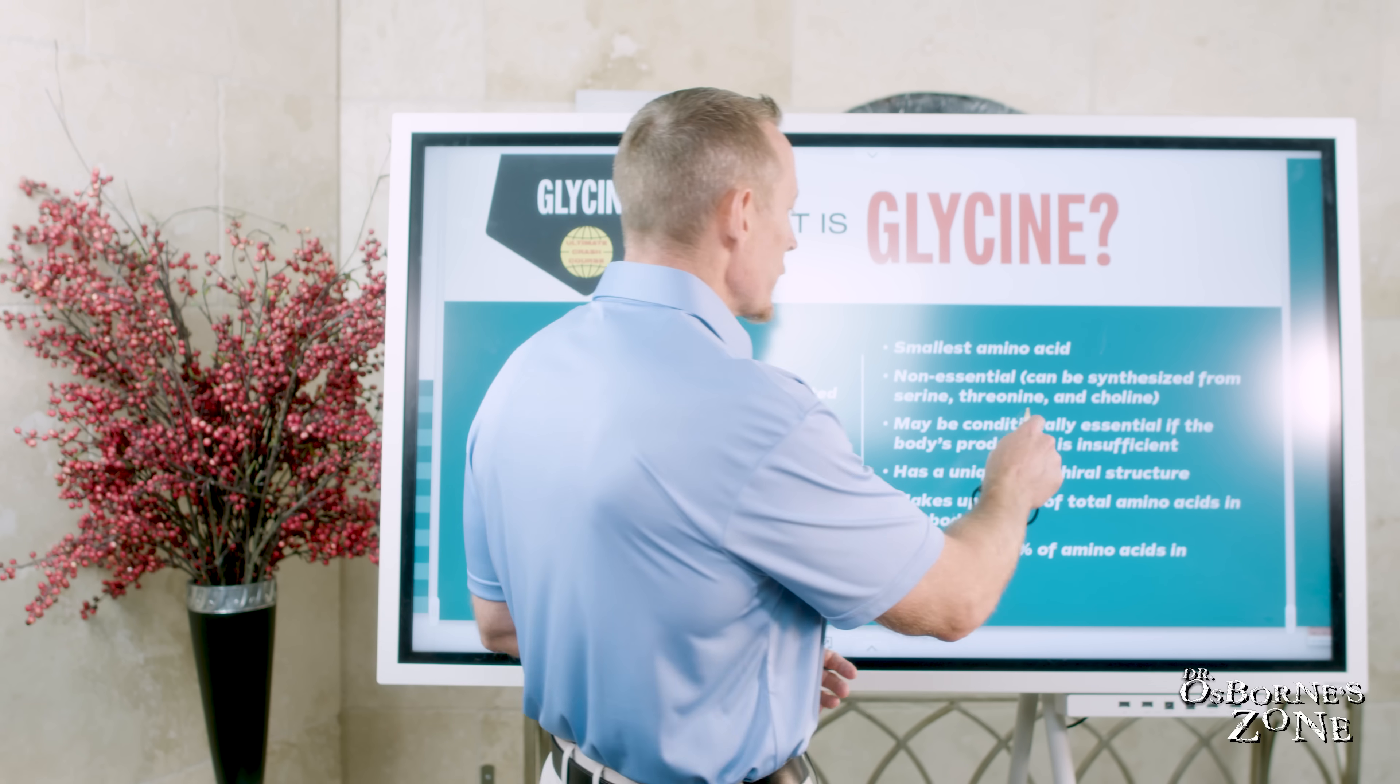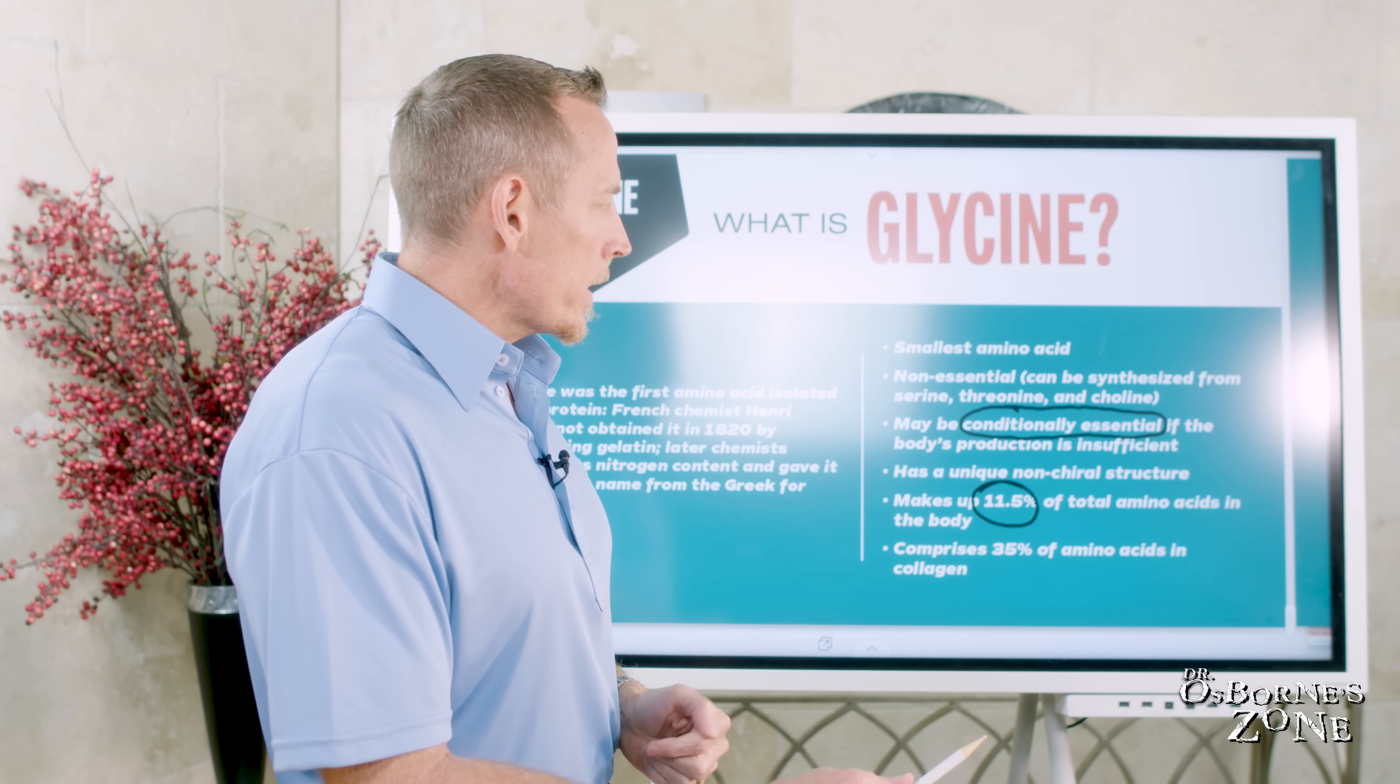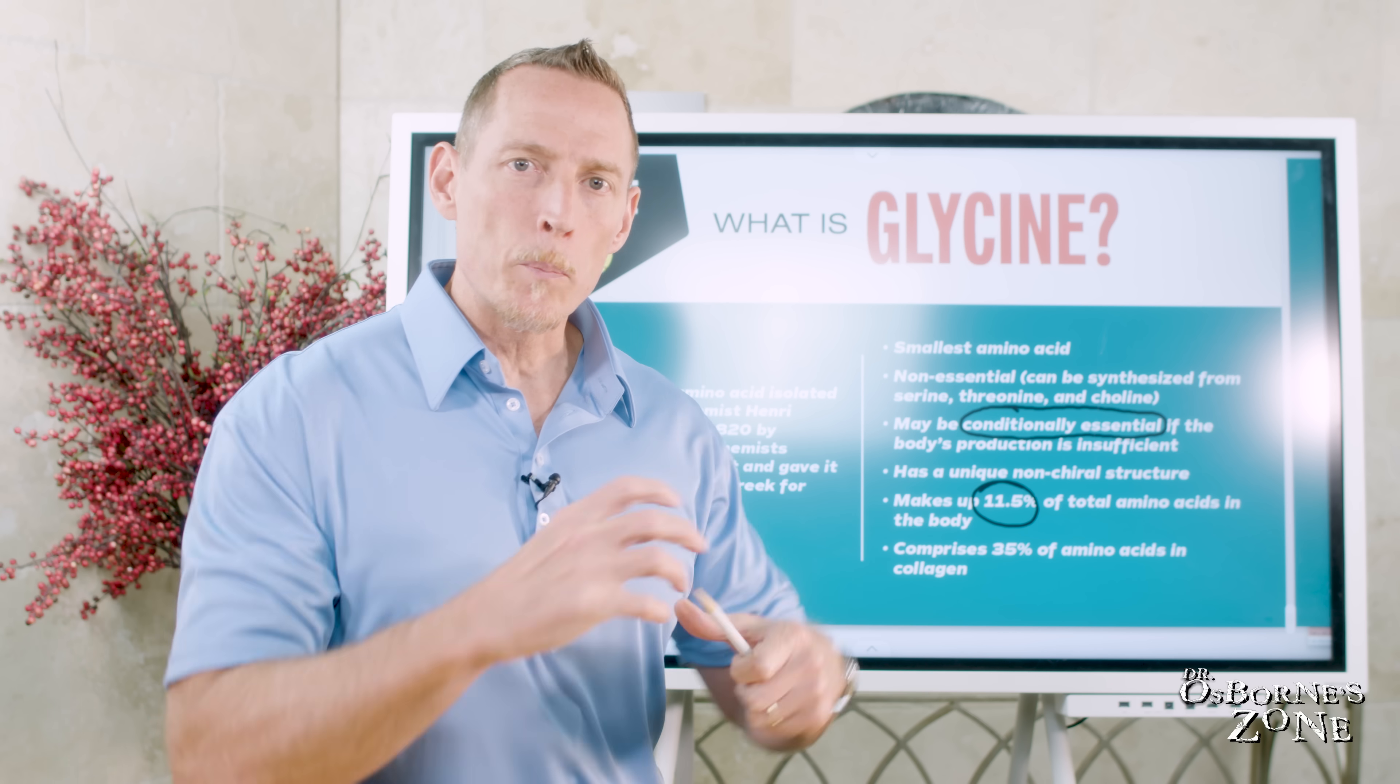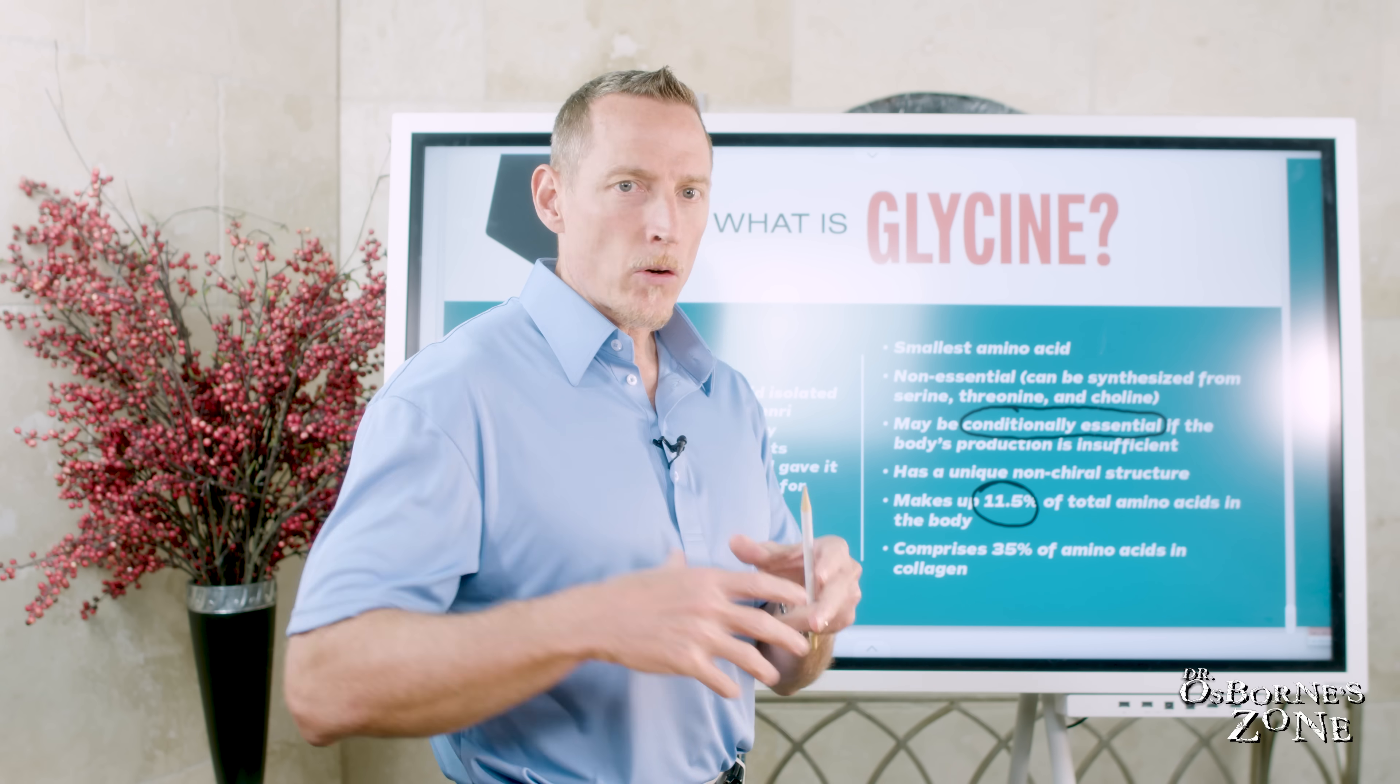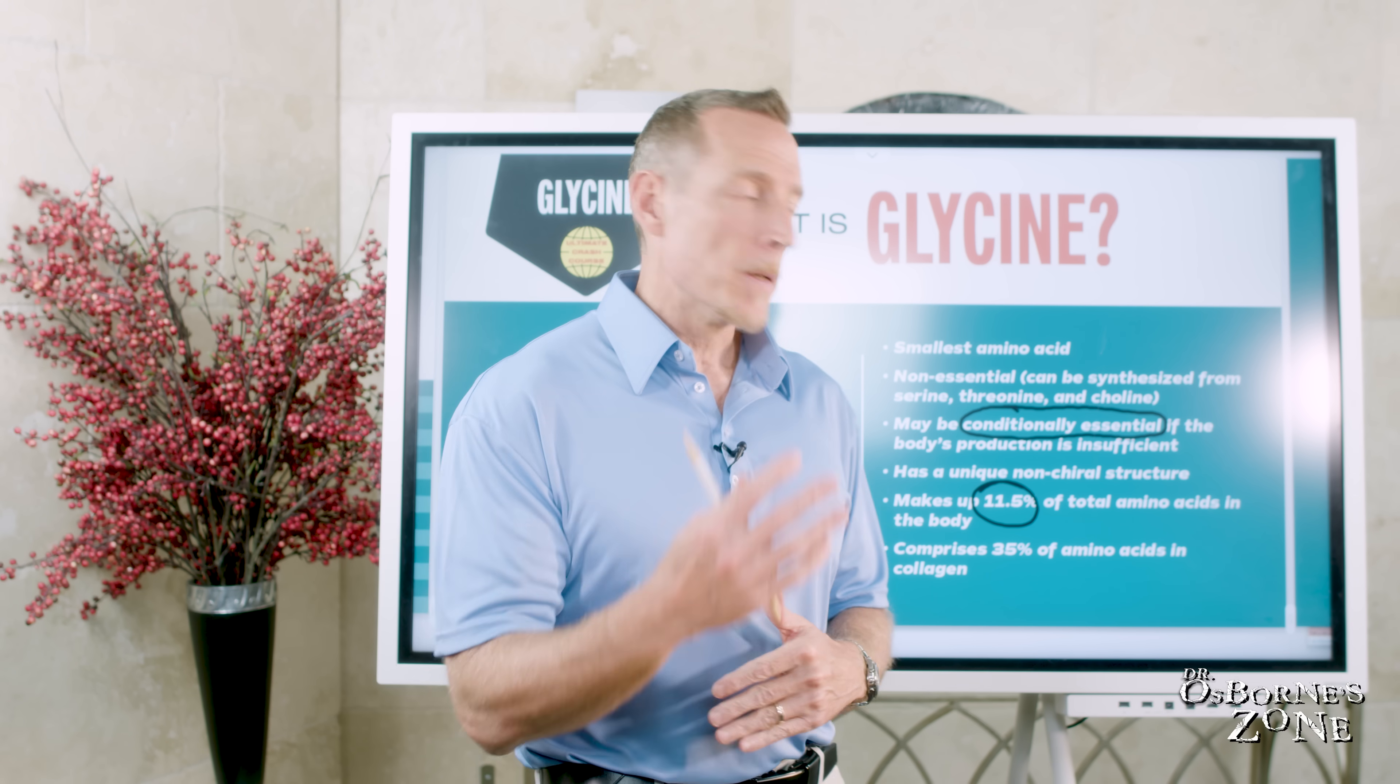You'll see this term a lot with amino acids, conditionally essential, meaning under certain circumstances or conditions we need to eat more of it than our body can produce. And that's also true of glycine. One of the things that makes it unique is it has a non-chiral structure, so it helps create forms or bends in proteins because it doesn't have this large or obtuse arm sticking off the side of it. Molecularly speaking, it's great for helping proteins bend.